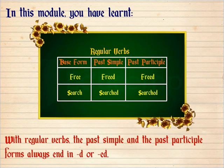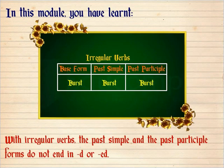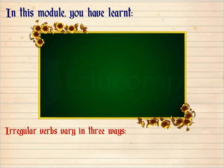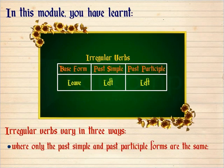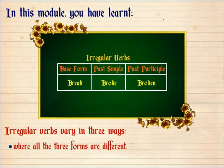With regular verbs, the past simple and the past participle forms always end in D or ED. With irregular verbs, the past simple and the past participle forms do not end in D or ED. Irregular verbs vary in three ways: where all the three forms — base form, past simple, and past participle — are the same; where only the past simple and past participle forms are the same; and where all the three forms are different.